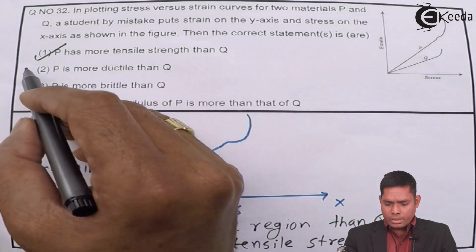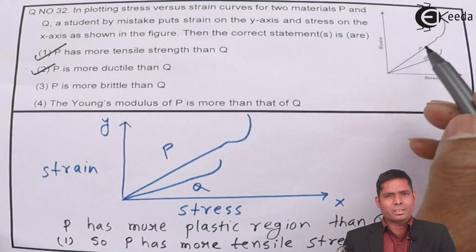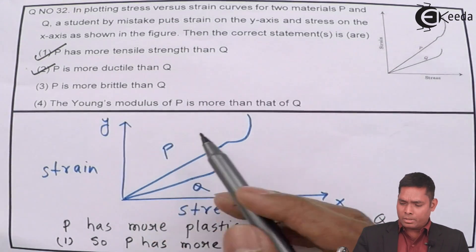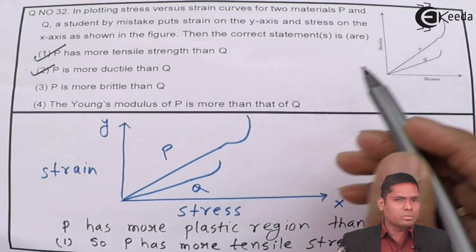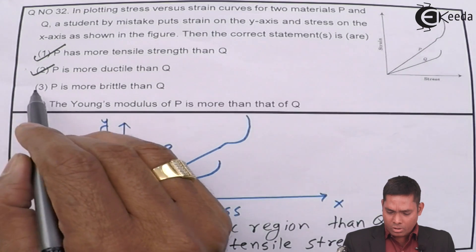Now P is more ductile than Q. That is correct because this can be drawn, ductile property. It can be drawn into wire because it has got large plastic region. So it can be drawn into wire. This is correct. P is more brittle - no, it is not correct. This is wrong.